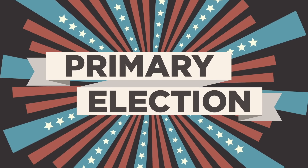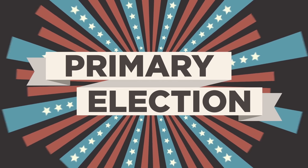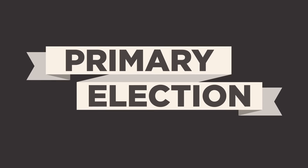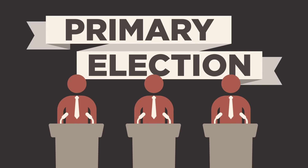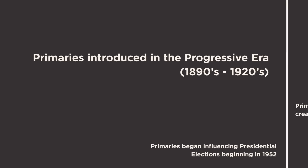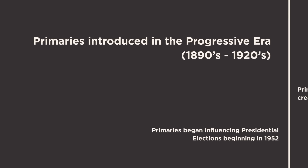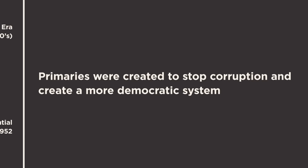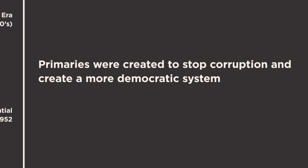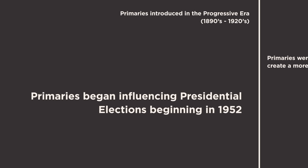Major elections in a two-party system are often held in two phases. The first phase is the primary election, where party members choose which candidates they want to represent them on the general election ballot. For historical context, primaries were introduced in the Progressive Era in the early 20th century to weaken the power of bosses and make the system more democratic.